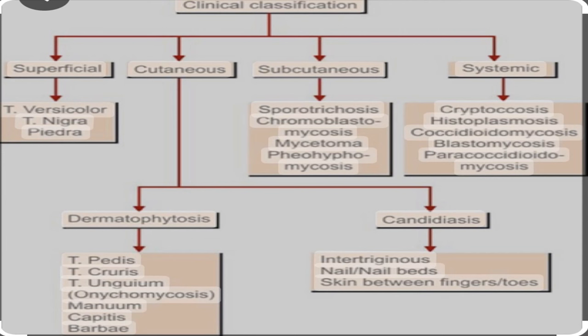Clinical classification of mycoses: superficial infections include tinea versicolor, tinea nigra, piedra, and dermatophytes — involving skin, hair, nail, and mucosa. Subcutaneous includes sporotrichosis, chromoblastomycosis, mycetoma, phaeohyphomycosis, and rhinosporidiosis. Systemic mycosis includes Cryptococcus, histoplasmosis, coccidioidomycosis, blastomycosis, and paracoccidioidomycosis. Opportunistic mycosis includes candidiasis, Cryptococcus, zygomycosis, aspergillosis, and penicilliosis.